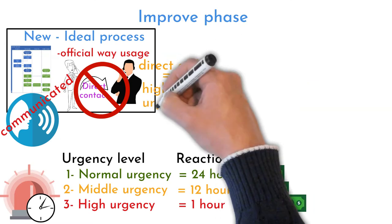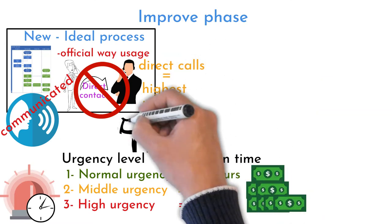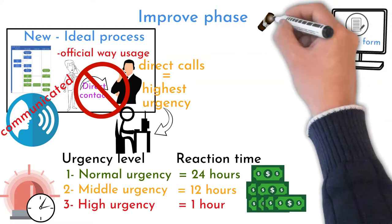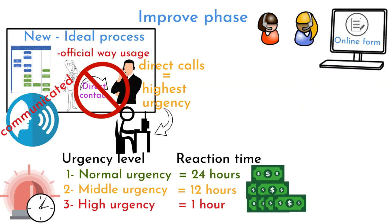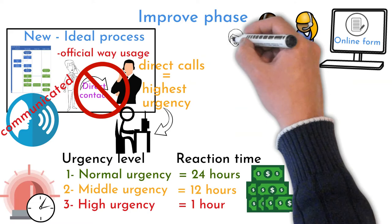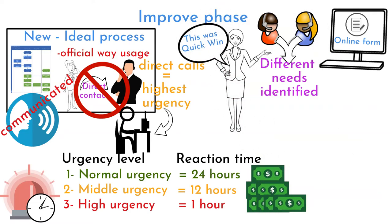If a customer calls support directly, it is considered highest urgency reaction. The help desk person creates a ticket instead of the customer in this case. The online ticket form was reviewed. Important fields were discussed and identified by different support teams. Delays caused by improper problem description were reduced from initial 20% to 1% by proper problem description and sufficient information in the ticket. This simple action improved reaction time by three days.